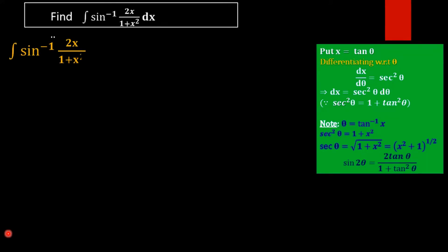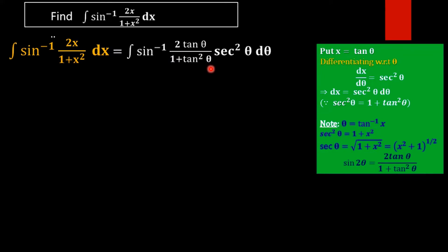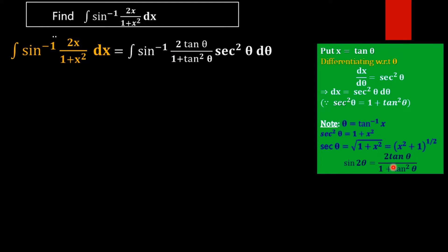Substituting x = tan θ, the expression inside sin inverse becomes 2tan θ divided by (1 + tan²θ), and dx becomes sec²θ dθ. Note that 2tan θ / (1 + tan²θ) equals sin 2θ — this is a standard trigonometric identity.